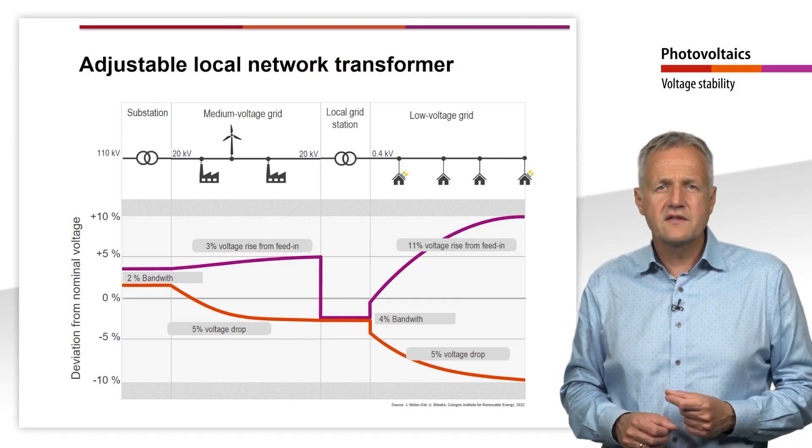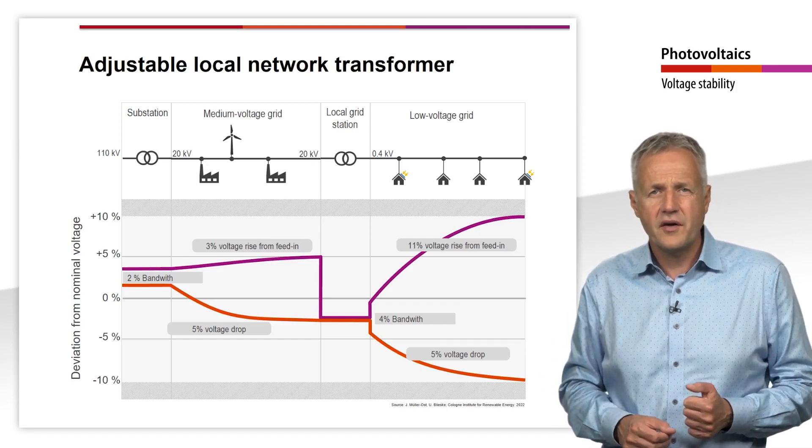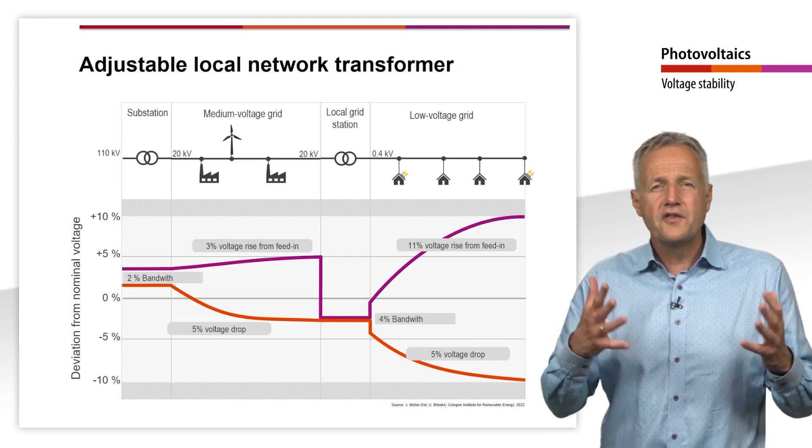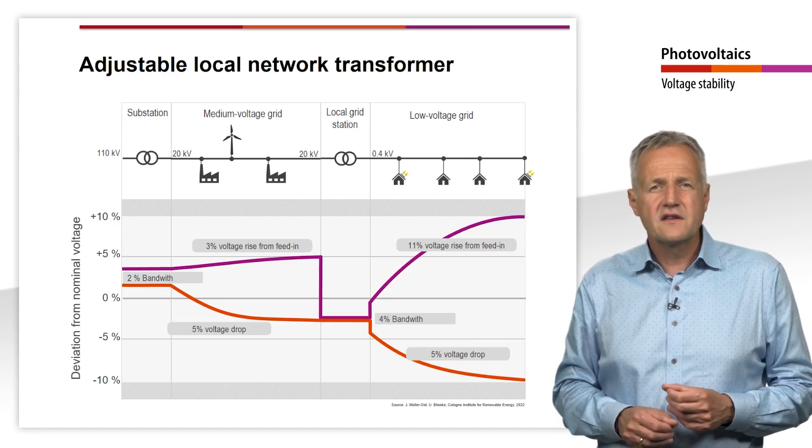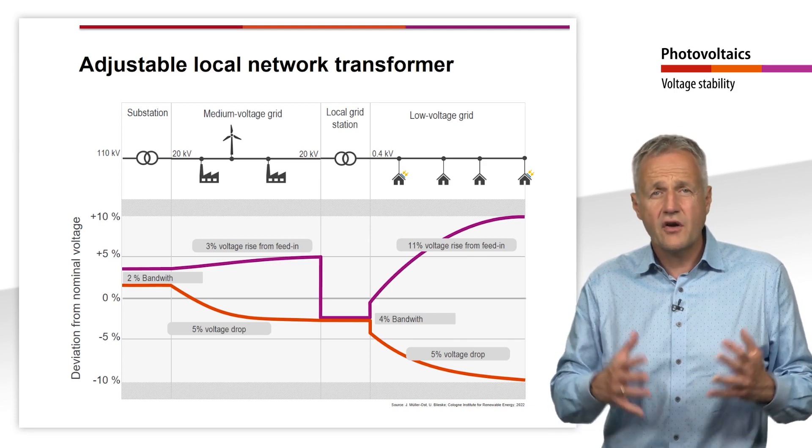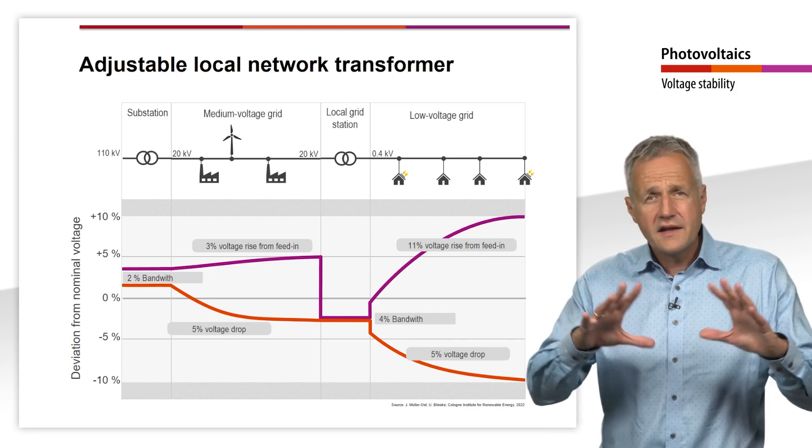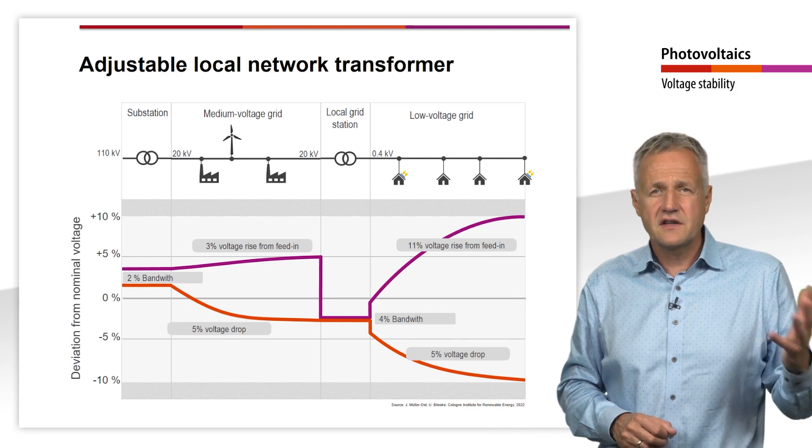Various means are used to counteract the voltage rise caused by a photovoltaic system on the part of the grid. One of these is an expansion of the grid so that more lines are available for generators and consumers.